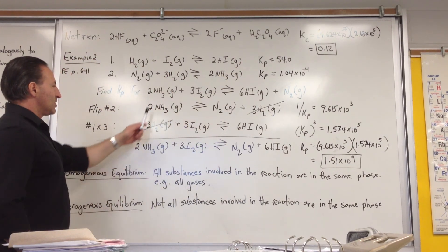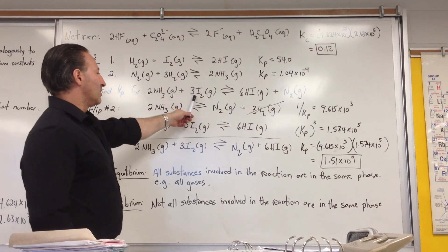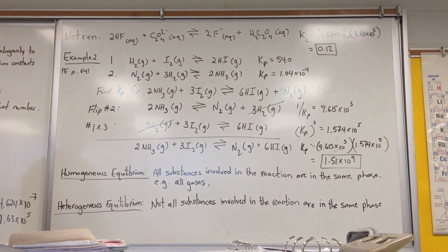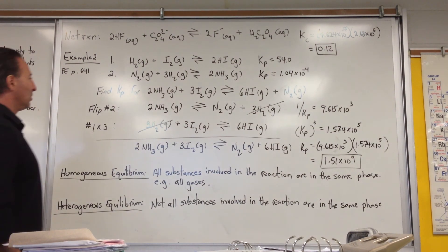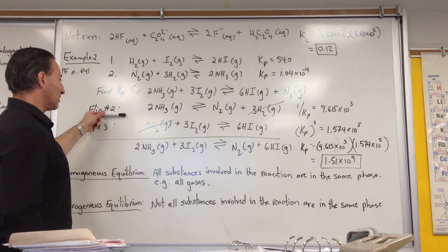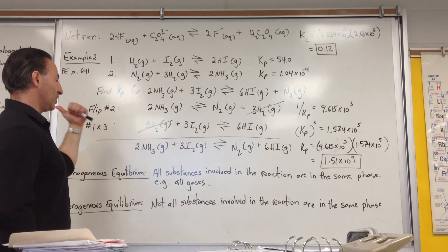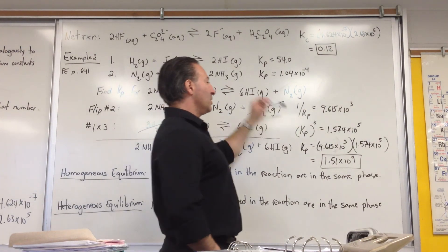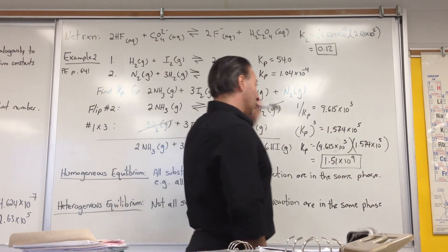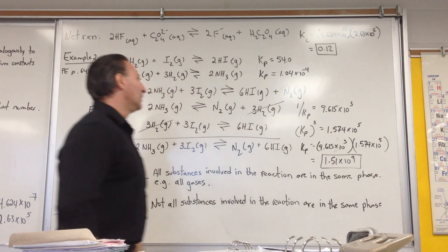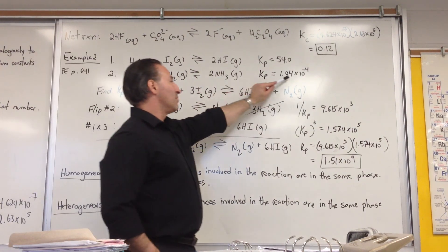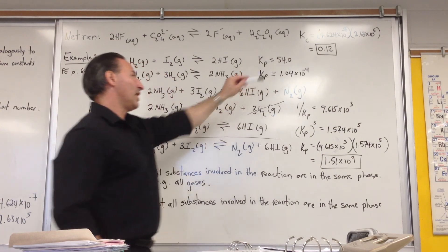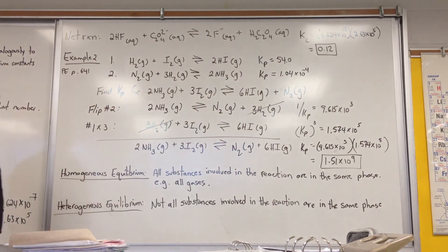The target reaction is to combine ammonia with gaseous iodine to give hydriodic acid and nitrogen gas. To get that target equation, we need to flip the second equation. So we put the ammonia on the left, nitrogen gas and hydrogen gas on the right. So if we flip the equation, we take the reciprocal of the equilibrium constant giving this number. So we take this number and raise it to the power of minus one, or one over that number will give you 9.615 times 10 to the 3.